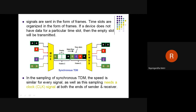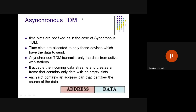This is Synchronous TDM. It is called synchronous because the sampling speed is similar for every signal, so it requires a synchronized clock at both the sender and receiver ends.